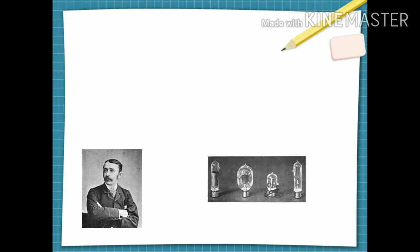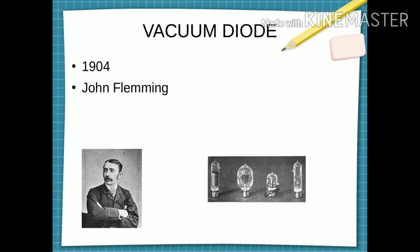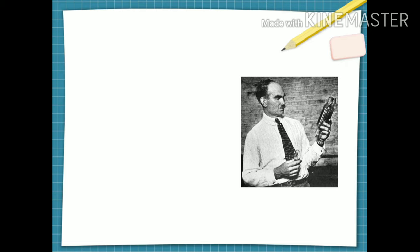Following that, John Fleming in 1904 applied Edison effect in inventing a two-element electron tube called vacuum diode, as shown in the figure. Then following this, Lee de Forrest developed a three-element tube called vacuum triode in 1906.